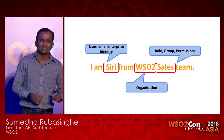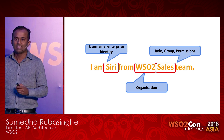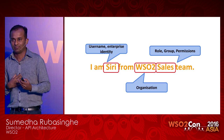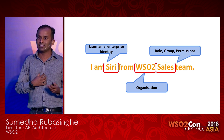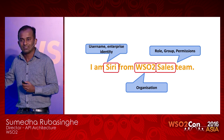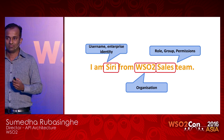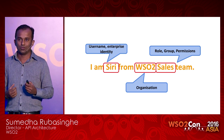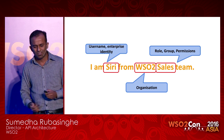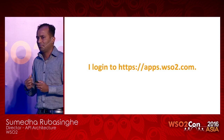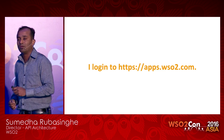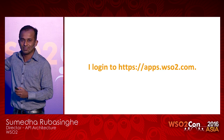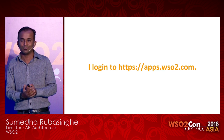The statement 'I'm Siri from WSRU' has certain things that are common: Siri is the name, the username, the identity I have within the enterprise. WSRU is the organization, and 'sales team' is a role, a permission. With that, I log into apps.wsru.com. This is actually a public URL, but you won't be able to go further beyond that unless you have valid WSRU credentials. This is our app store, and I'm using the product called WSRU App Manager.